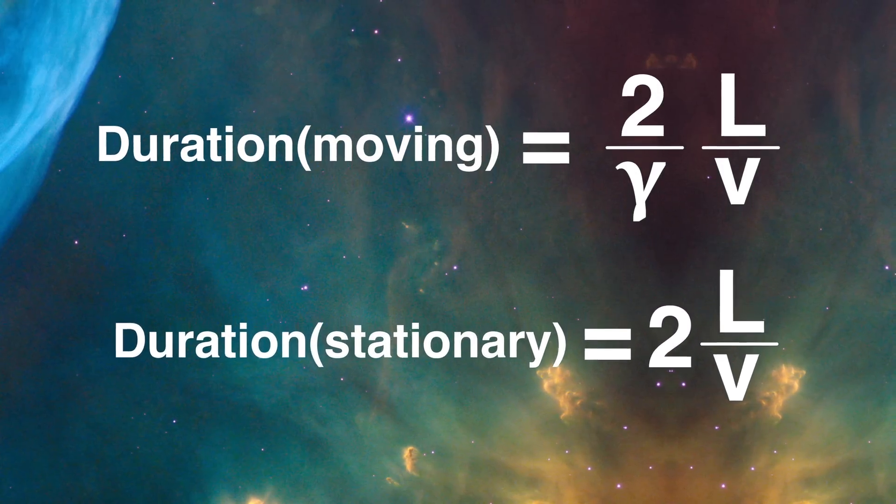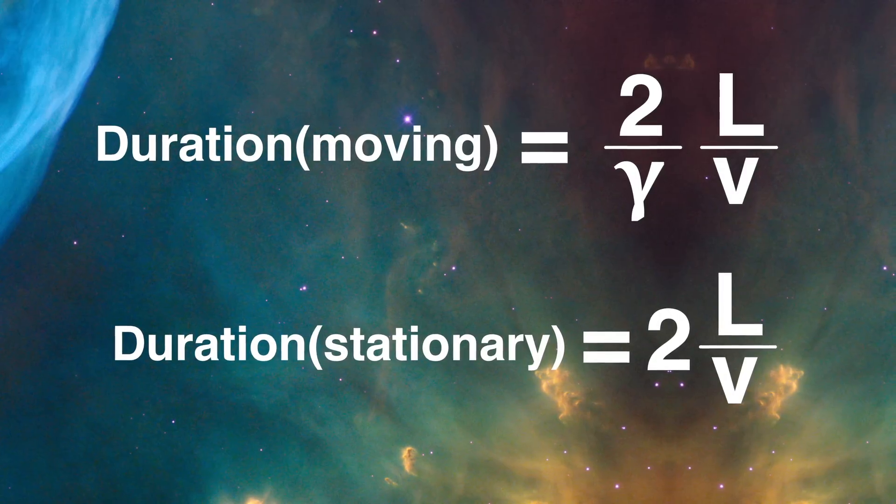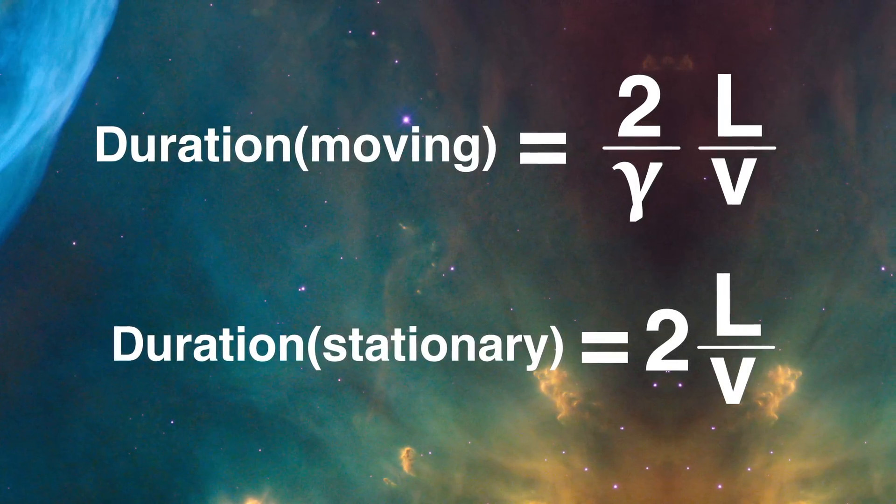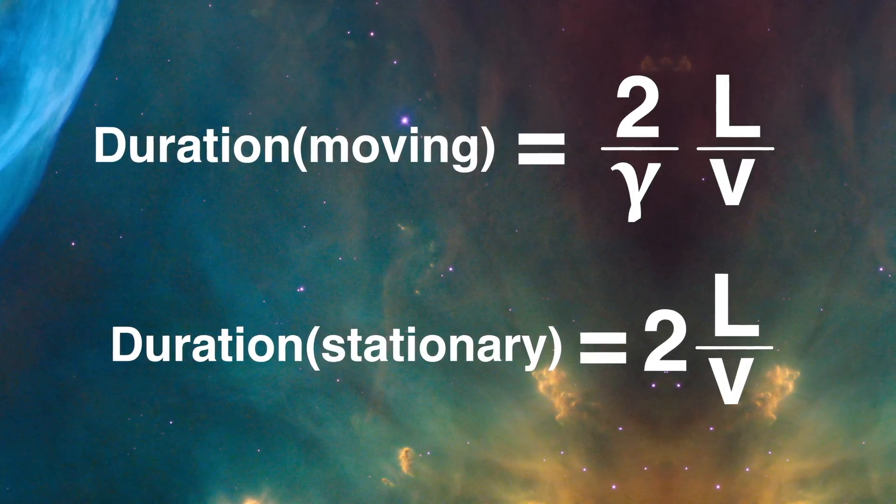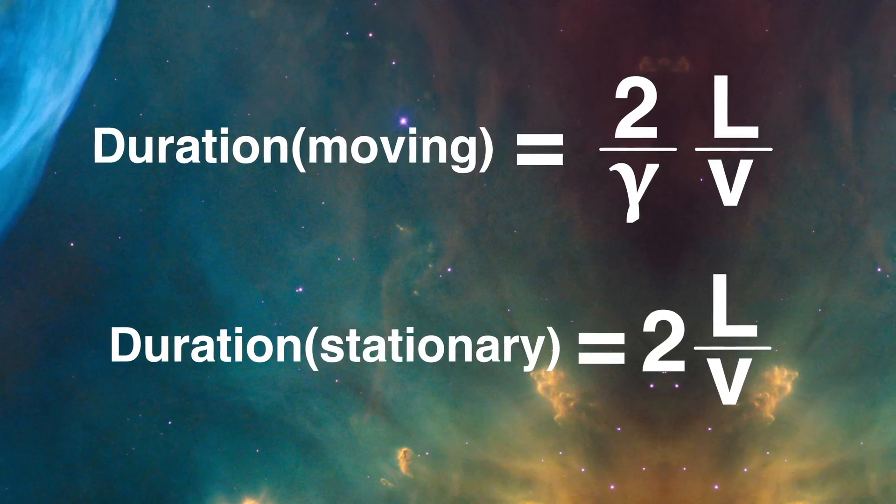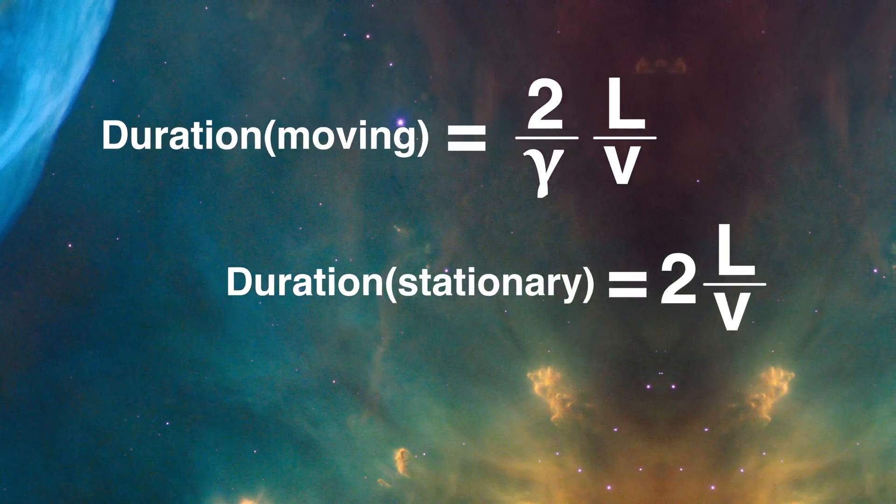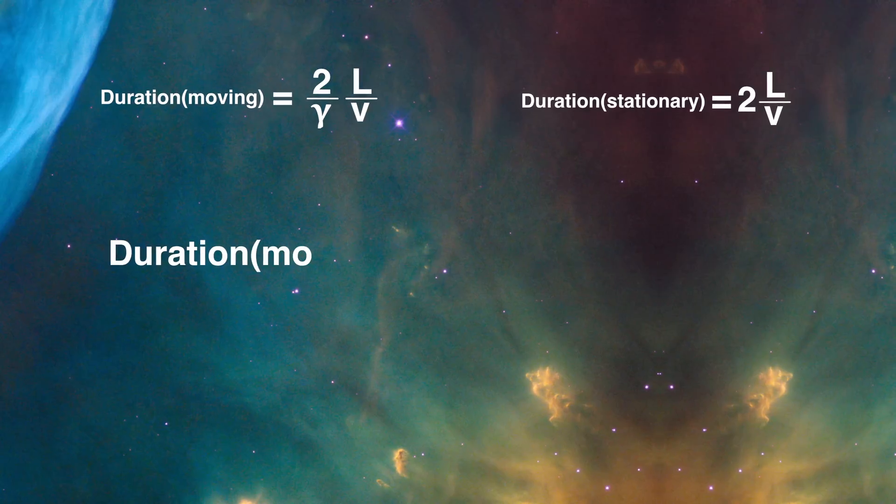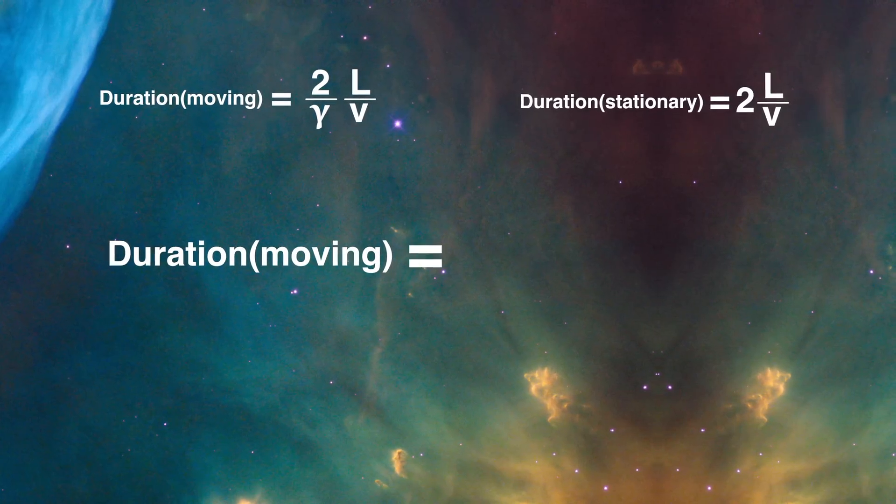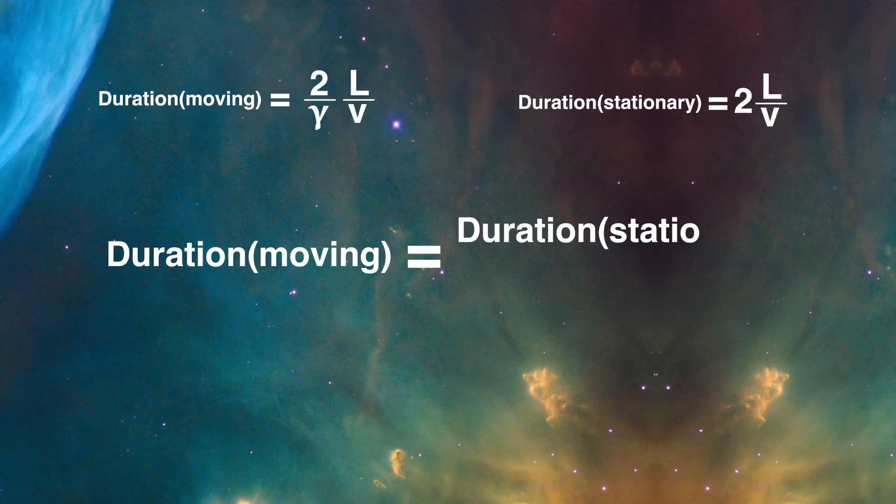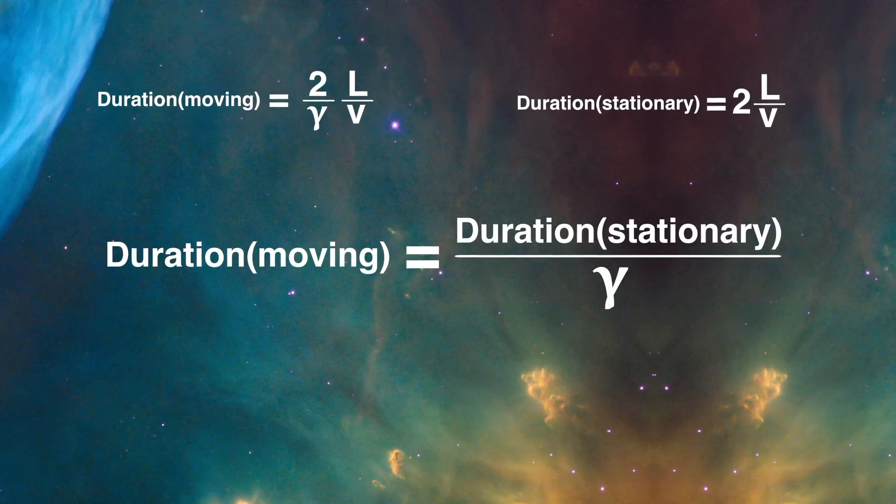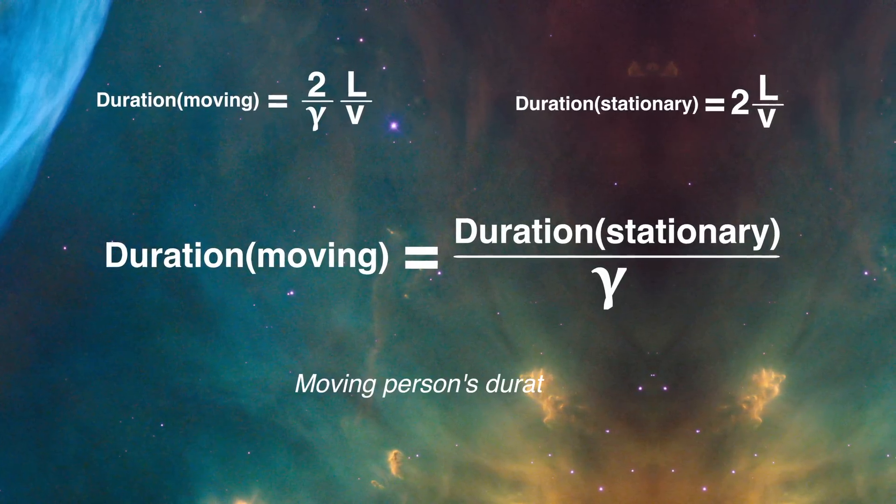Now compare that to what the stationary observer, observer A experienced, and that's just a time of two times L divided by V, which is the same as the moving observer but without the gamma. So when you get down to the final nitty-gritty, you find that the duration of the moving observer is just the duration of the stationary observer divided by gamma.